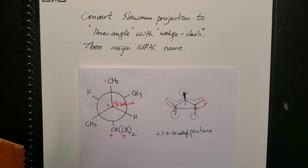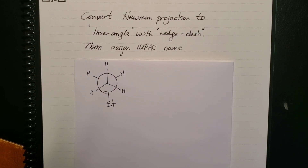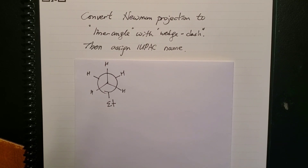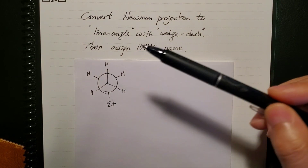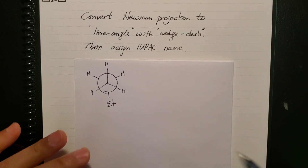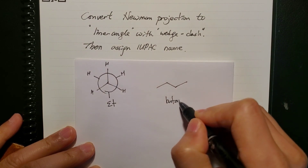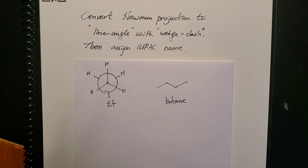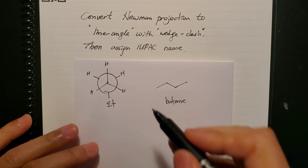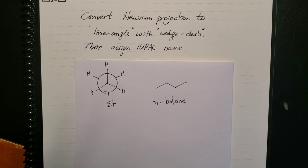Here is a pretty simple molecule — a giveaway point. You have two carbons here with just hydrogen, and two more there. This is just butane. But when you say butane, butane can have many isomers, so make sure you say this is the normal straight-chain isomer: n-butane.